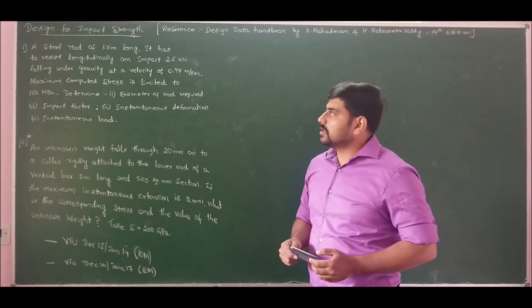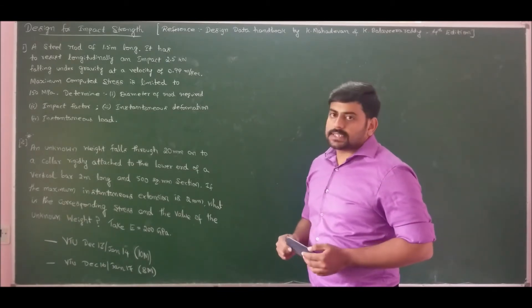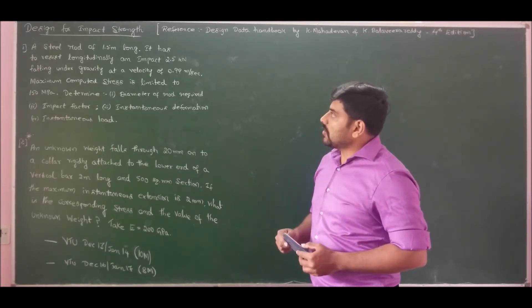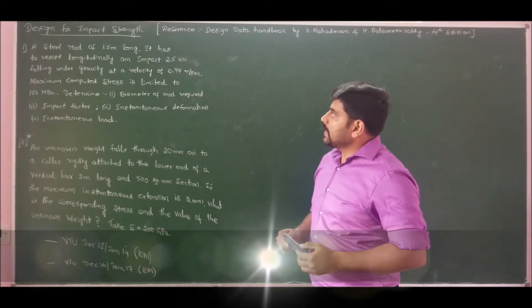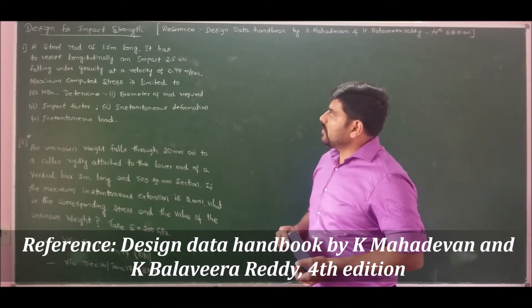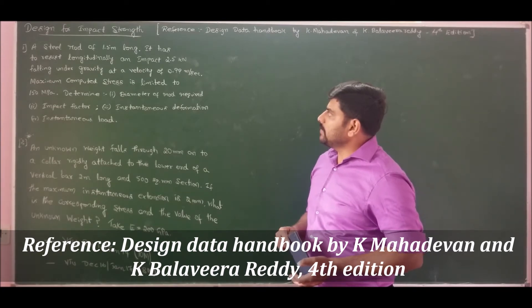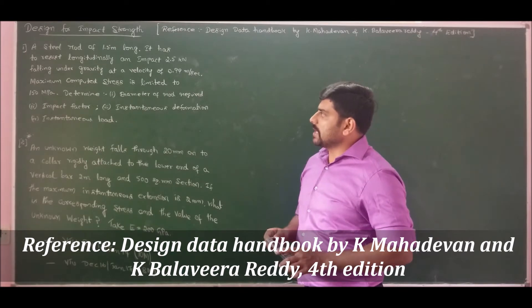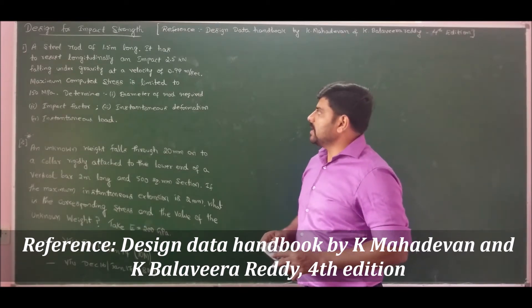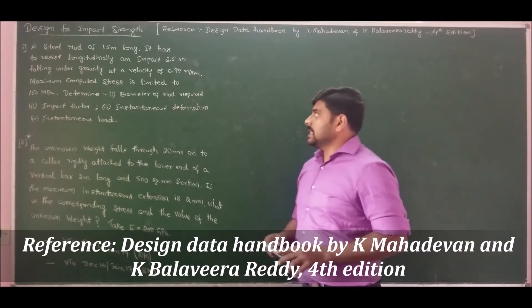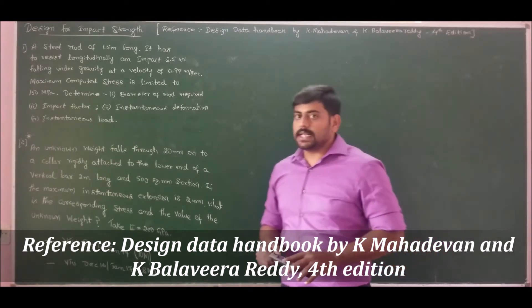Problem number 1 on design for impact strength states that a steel rod of 1.5 meters long has to resist longitudinally an impact of 2.5 kN falling under gravity at a velocity of 0.99 meters per second. Maximum computed stress is limited to 150 MPa. Determine the diameter of the rod required, the impact factor, instantaneous deformation, and instantaneous load.